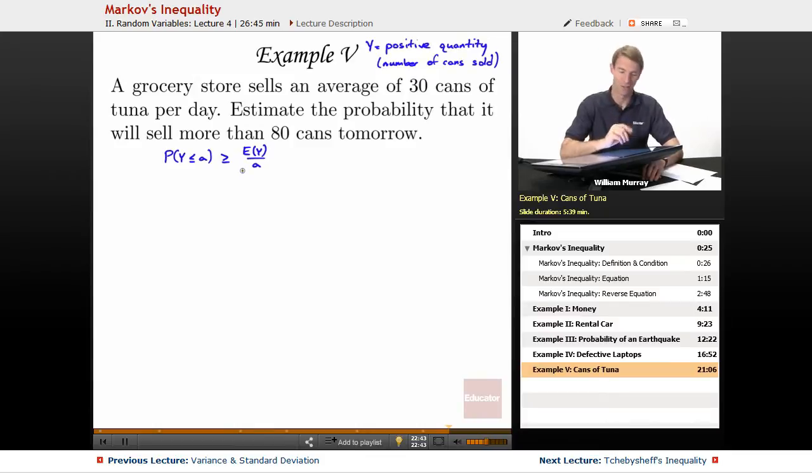In this case, our a is our cutoff value. The probability in this case, we're trying to estimate the probability that it will sell less, I'm sorry, more than 80 cans.